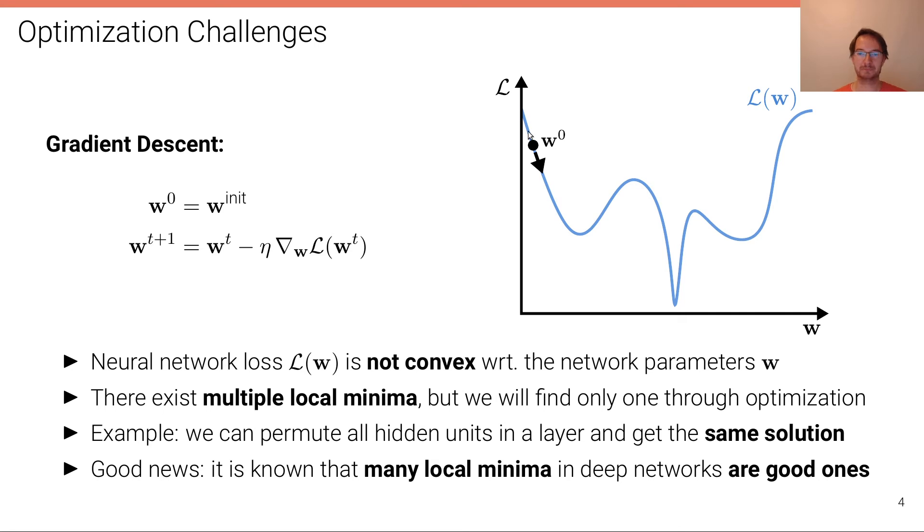As already mentioned, in deep neural networks the loss is almost always not convex. That means it has multiple local minima. There is not a line that connects any two points where the curve is always below that line, which is the definition of convexity. We have points where we slope upwards to the left and upwards to the right, and we have multiple of these points. So there exist multiple local minima. These are called local minima because some of them are not global minima.